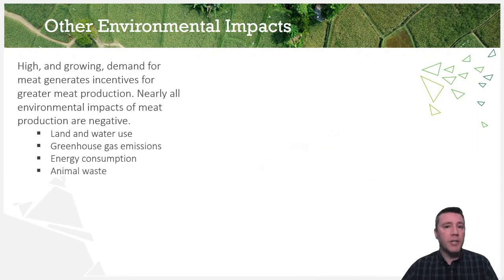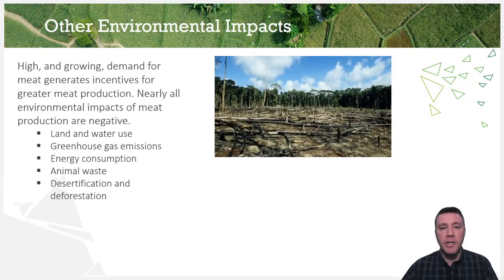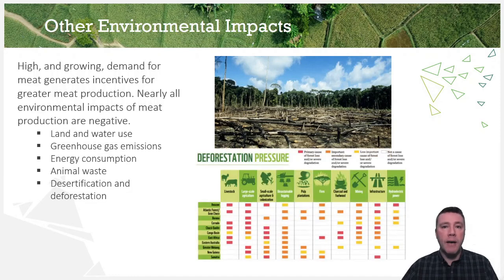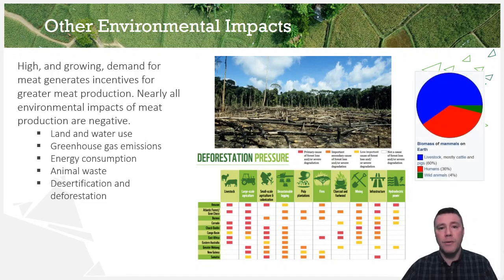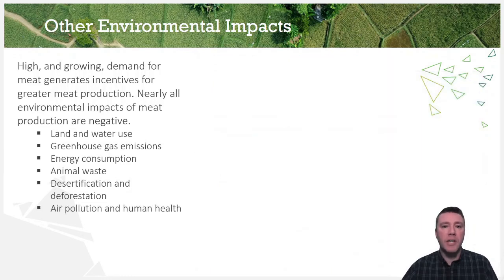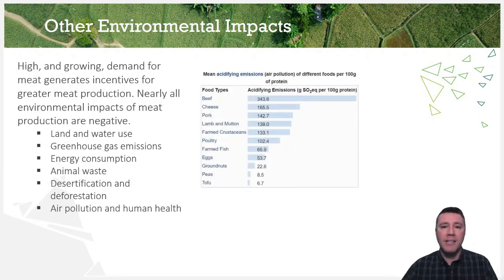In addition to animal waste and desertification, deforestation is a growing problem directly connected to the meat production industry. In nearly every region of the world — from the Amazon to Africa, Australia to Sumatra — large and small scale agriculture and the meat production industry are significant contributing factors to deforestation, since forested land needs to be cleared to make space for those industries. Livestock, such as cattle and pigs, account for nearly two-thirds of all mammal biomass on Earth. Meat production is one of the leading causes of particulate matter and pollution in the atmosphere, as well as the formation of acid-producing emissions such as sulfur dioxide. Emissions such as these have been associated with respiratory conditions like bronchitis and asthma, as well as increased prevalence of pneumonia from bacterial infections.